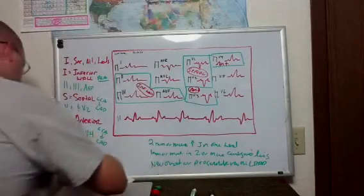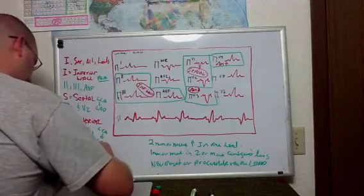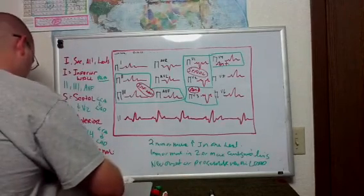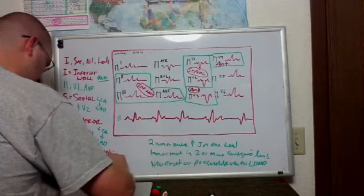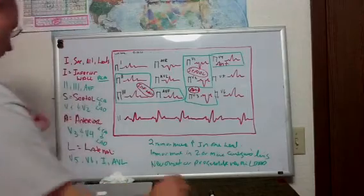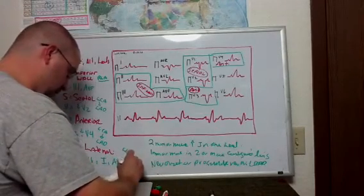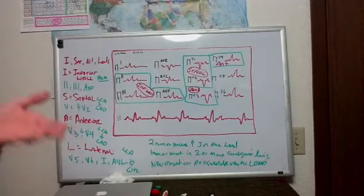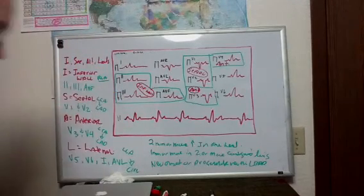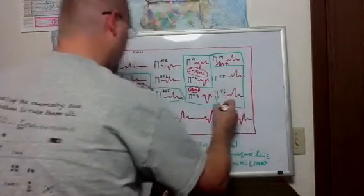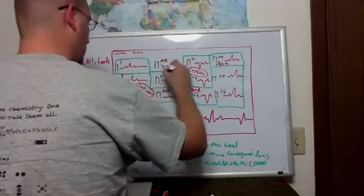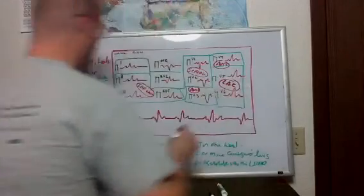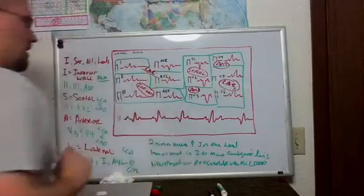And then L leads is going to be the lateral wall of the left ventricle, and that will be V5, V6, 1, and augmented vector left, AVL. And this is the left coronary artery, or specifically the circumflex, the circumflex branch off of the left coronary artery that kind of wraps around the lateral wall of the heart and then goes to the posterior aspect. So V5, V6, 1, and AVL. We'll just draw lateral here, and then lateral here as well.